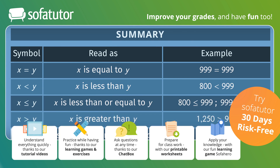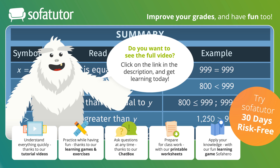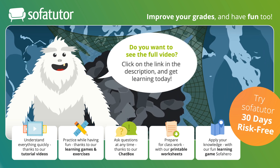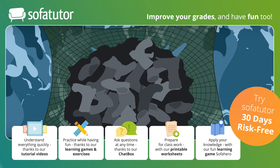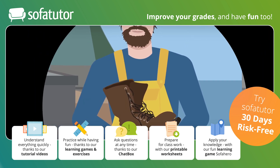Finally, we use the greater than or equal to sign if the value on the left side is larger than the value on the right side, or is the same. Since 1,250 is at least equal to 1,000, we can use the greater than or equal to sign. Let's get back to Skeeter and see how many pounds of fish he caught today. Have you ever seen that species of fish before?